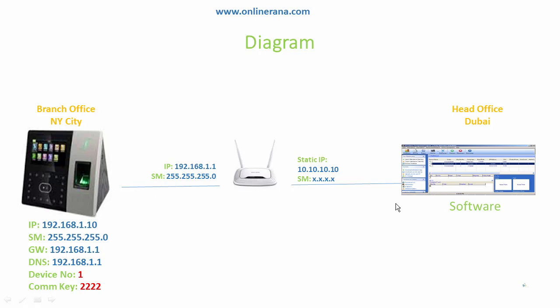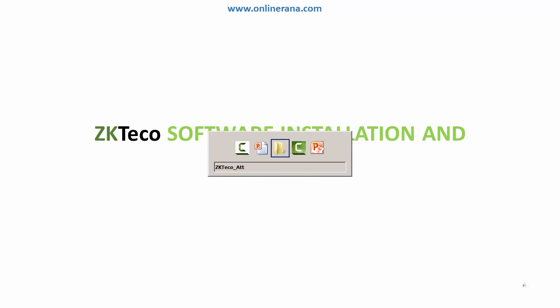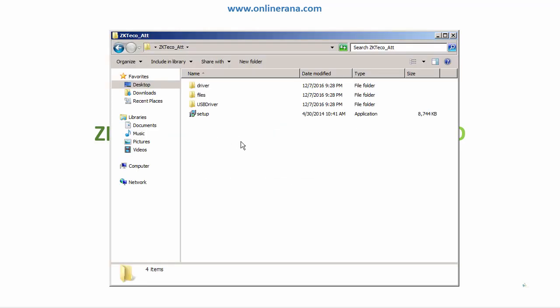If there is NAT involved in your network, then it will be a different scenario — we'll discuss how to handle that. So let's first install our software. I've jumped to the software installation. You'll be provided with a CD or DVD, or you can find the source from the ZKTECO site.